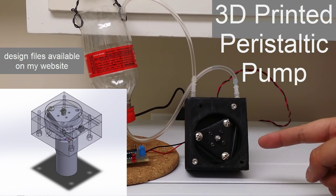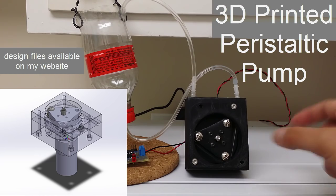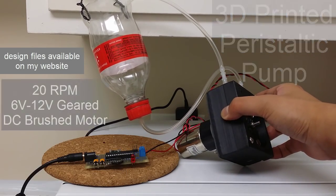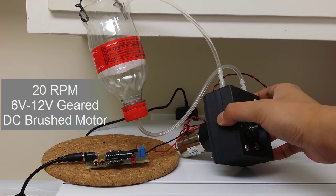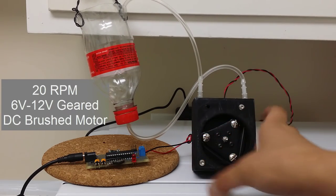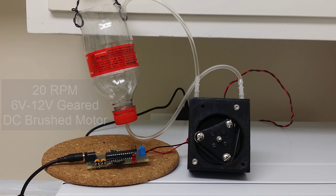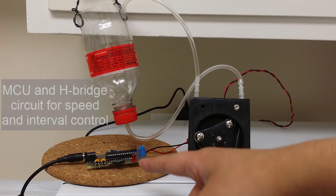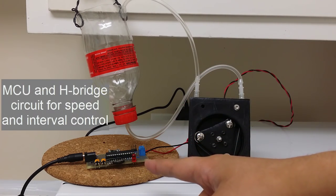This is my 3D printed peristaltic pump. On the back is a gear motor that spins at around 20 RPM and takes 6 to 12 volts of power. It's plugged into a 12 volt power supply connected to this circuit,